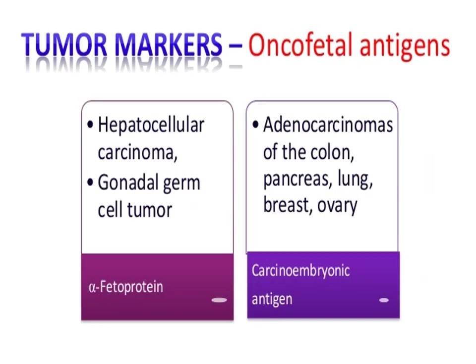Tumor markers of the oncofetal antigen class include alpha-fetoprotein (AFP), which rises in hepatocellular carcinoma and gonadal germ cell tumors, and CEA (carcinoembryonic antigen), which increases in adenocarcinoma of the colon, pancreas, lung, breast, and ovary.